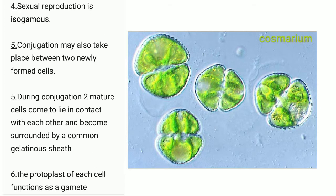Sexual reproduction is isogamous type. Isogamous means the two gametes are the same. Conjugation may also take place between two newly formed cells. During conjugation, two mature cells come to lie in contact with each other and become surrounded by a common gelatinous sheath.